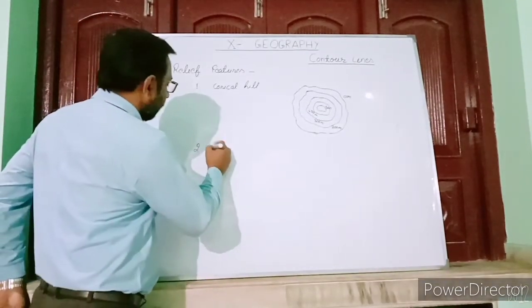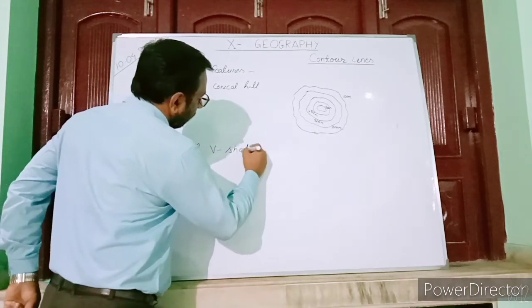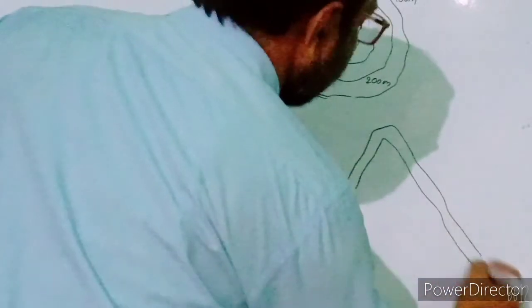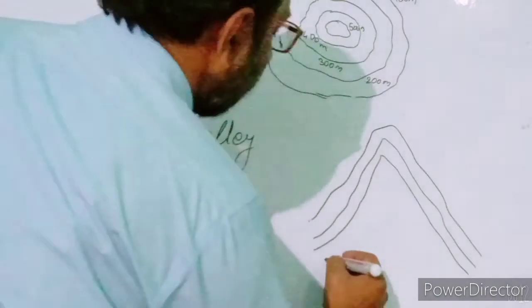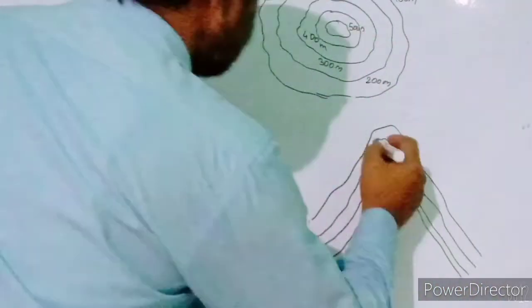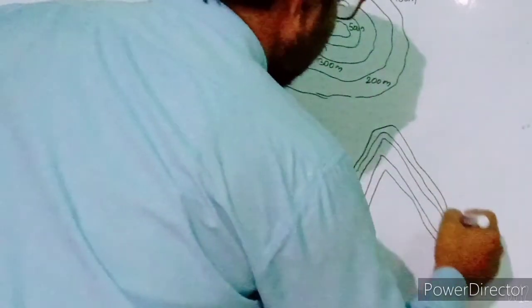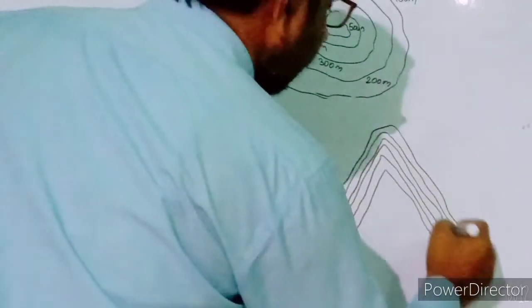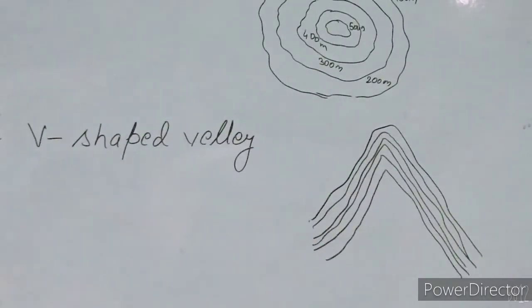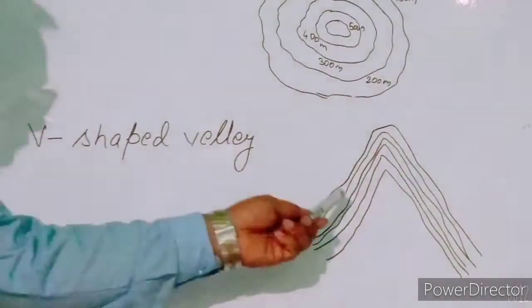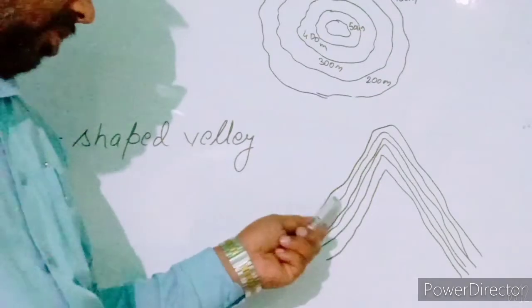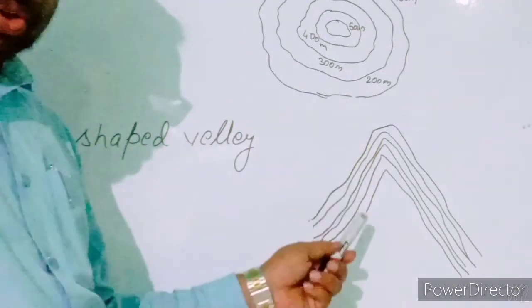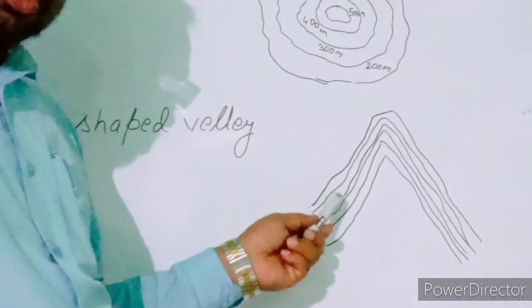The second relief feature is the V-shaped valley. The contour lines are drawn very close to each other. This pattern of contour lines represents the steep slope of the valley. All these contour lines are drawn in a V-shape, and the closer contour lines represent the steep slope of the valley.